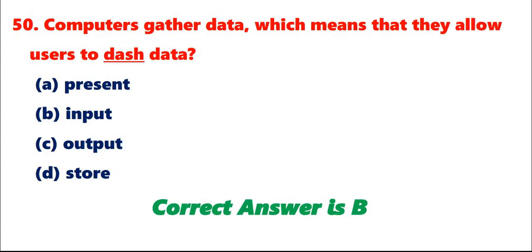Question 50: Computers gather data, which means that they allow users to data. A. Present. B. Input. C. Output. D. Store. Correct answer is B.